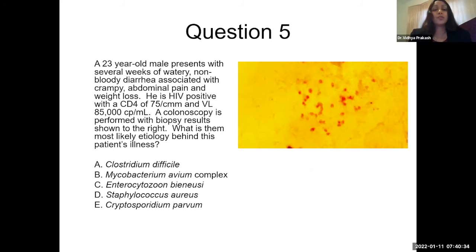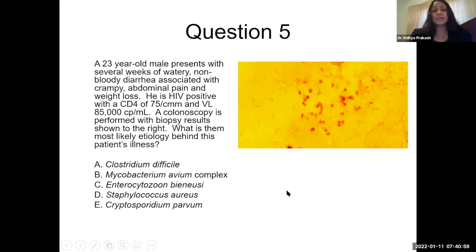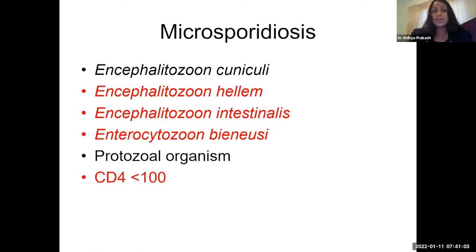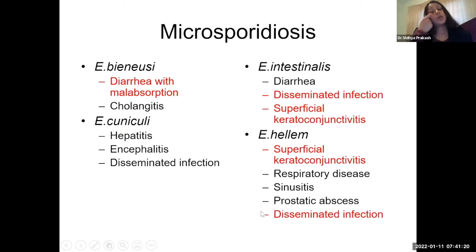Now, a 23-year-old male presenting with several weeks of watery, non-bloody diarrhea associated with crampy abdominal pain and weight loss. HIV positive with CD4 count of 75, viral load of 85,000. Colonoscopy with biopsy shows results to the right. This is a case of microsporidiosis. There are several types: Encephalitozoon cuniculi, Encephalitozoon hellem, Encephalitozoon intestinalis, and Enterocytozoon bieneusi — a protozoal organism generally associated with CD4 counts less than 100.